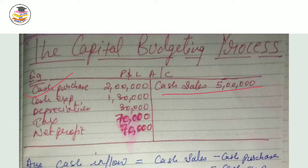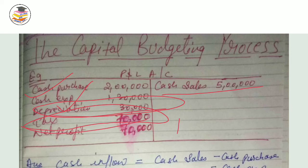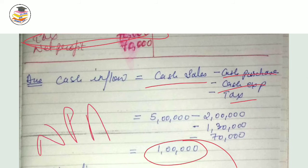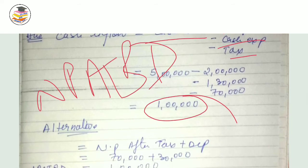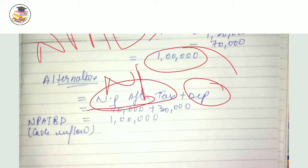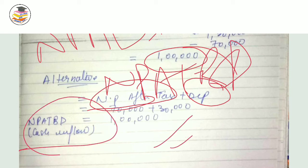You minus cash purchases because you have outflow, minus cash expenses, minus tax expenses. Tax is a cash expense so you minus tax expenses as well. After that, depreciation will not be deducted — that only happens in this case. The alternative way is: net profit after tax, then you add back depreciation, so this gives net profit after tax before depreciation. Both methods give the same answer — no difference.